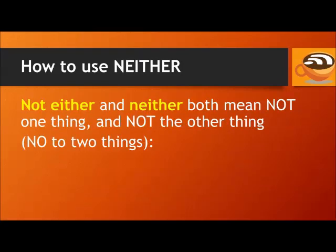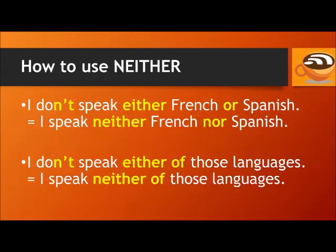Now let's look at neither. Not either and neither both mean not one thing and not the other thing. For example, I don't speak either French or Spanish is the same as I speak neither French nor Spanish — this means I don't speak French and I don't speak Spanish. You could also say I don't speak either of those languages, or I speak neither of those languages.